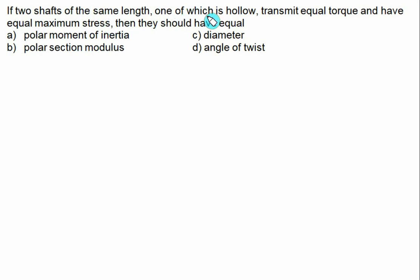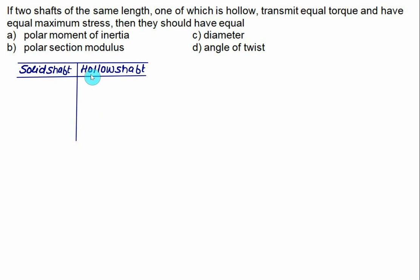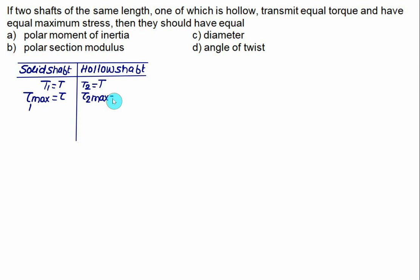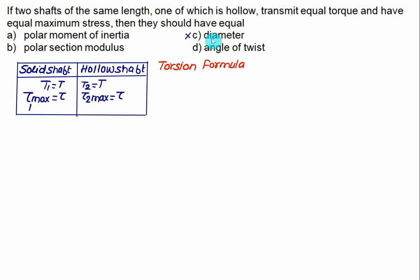Two shafts of the same length — one hollow and one solid — transmit equal torque and have equal maximum shear stress. We need to determine which property is equal: polar moment of inertia, polar section modulus, diameter, or angle of twist. Equal diameter is not a valid choice since it is unspecified. We apply the torsion formula T/J = τ_max/r.